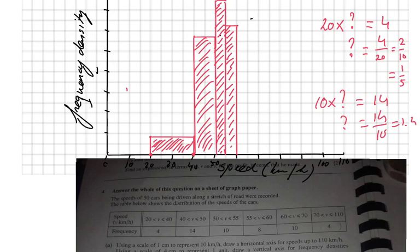Then from 60 to 70, that's a width of 10 again. The frequency is 10. So how high should it be? Well, that should be 1 high then, because 10 times 1 is 10. Here we go. And I go down. You don't have to shade those bars, by the way.